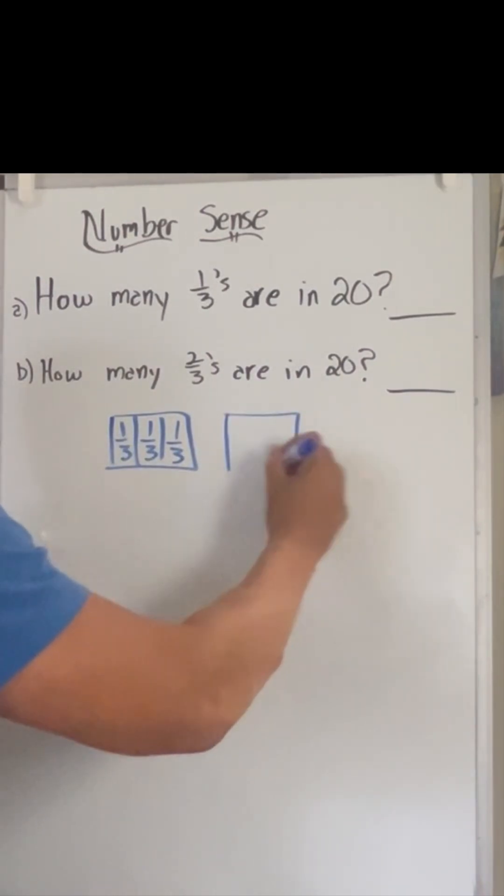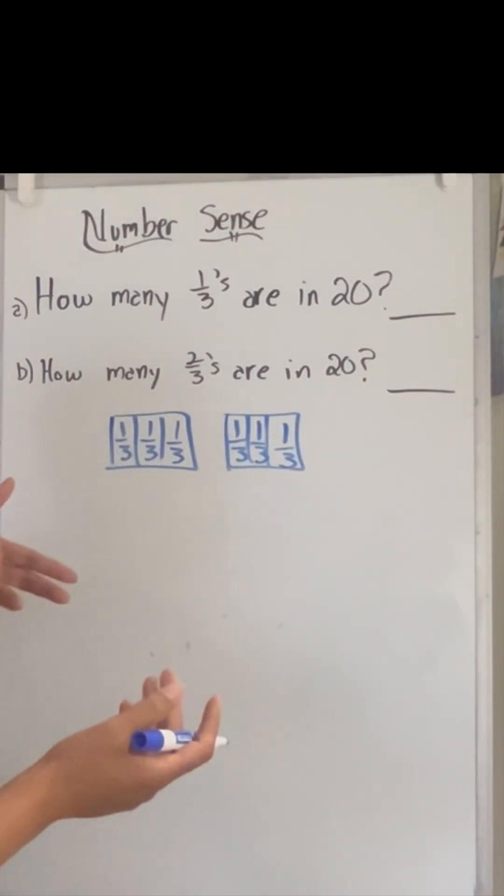Well, then how many would be in two? And they'll take a look at that, and they'll say, I guess it'll be six, right? Okay, how many would be in three? So we'll finally get nine.